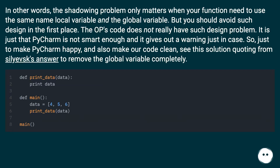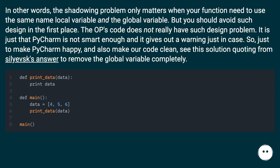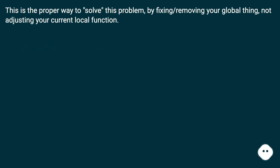The original poster's code does not really have such a design problem — it is just that PyCharm is not smart enough and gives out a warning just in case. So, to make PyCharm happy and also make our code clean, see this solution quoting from Silyevsk's answer: remove the global variable completely. This is the proper way to solve this problem — by fixing or removing your global, not by adjusting your local function.